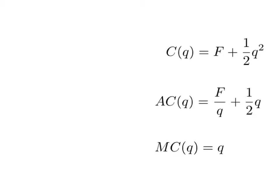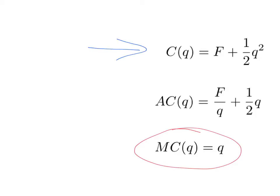The first technology is going to capture our idea of increasing marginal cost. The marginal cost function is given by this formula. The marginal cost of the first unit is 1, the second unit is 2, the third unit is 3, and so on — so the marginal cost of the Qth unit is Q. The general formula that captures that is this total cost function: we have our fixed cost as normal, and then our variable costs are one-half Q squared.